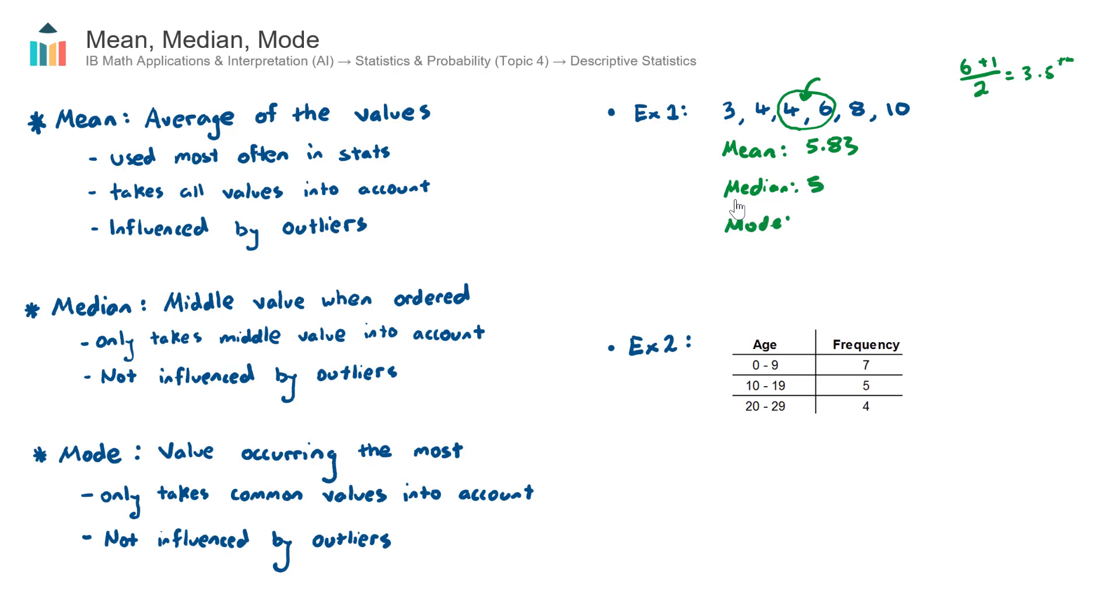Finally, the mode, very straightforward. Which value out of these six values occurs the most? Well, there's only one value, which is 4, that occurs more than once, so therefore our mode will be 4.